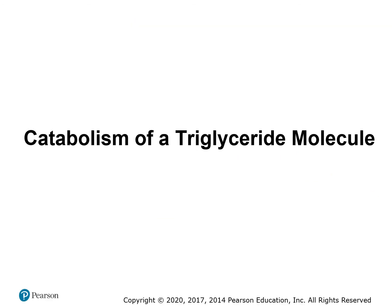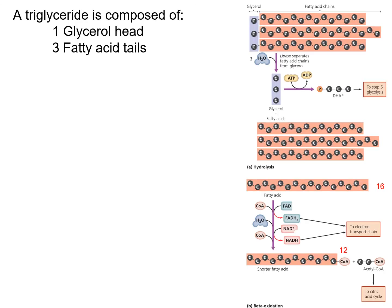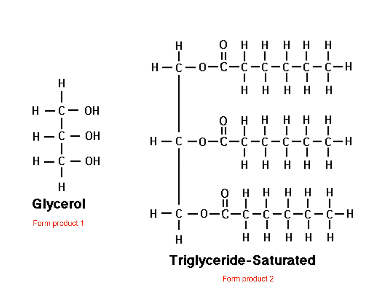The first one we will look at is the catabolism of a triglyceride molecule. A triglyceride is composed of a glycerol head — a three-carbon molecule — and three fatty acid tails. Another name for a triglyceride is a neutral fat. Here is an enlargement of a triglyceride. The difference from a phospholipid is that a phospholipid won't have a third tail, whereas a triglyceride has three fatty acid tails.